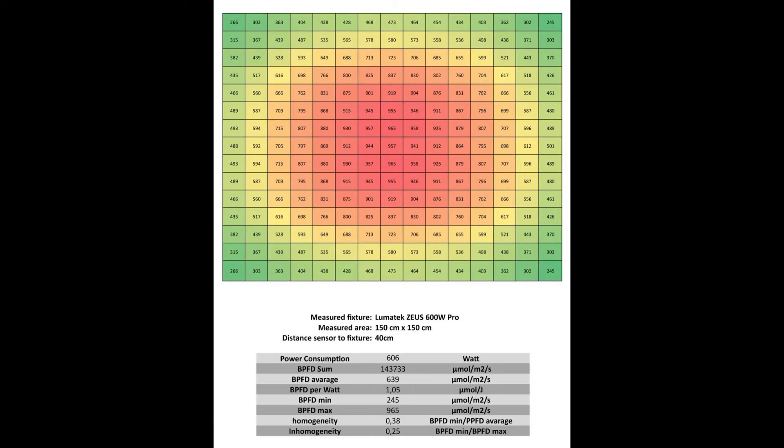The BPFD sum is 143,733. The BPFD average is 639. The BPFD per watt is 1.05.